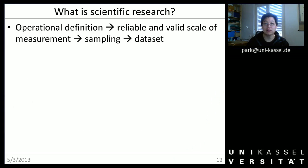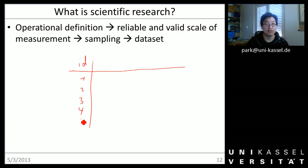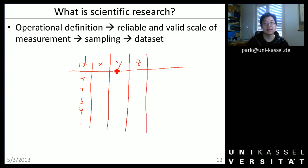Assume our scientist has found an operational definition and a reliable and valid scale of measurement for the phenomenon of interest. Then we collect our data. When we're done with that, we receive a data set. A data set you can typically think of as an Excel sheet. Usually it's something like this: we have an ID column, several persons in rows, some variable, another variable, and so on. Here we have different values. That's how you can think of the final data set.